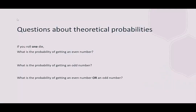First, we're going to look at just one die. What is the probability of getting an even number? In order to do probabilities, we just need to review what could possibly happen when we roll one die. We might list the sample space. We could roll a one, two, three, four, five, or six.